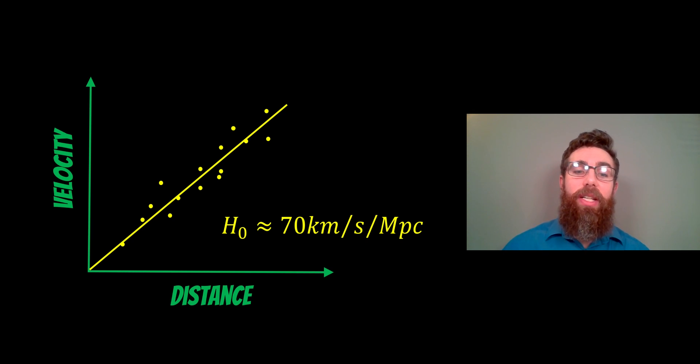It's a velocity per distance, and what that tells us is that the galaxies that are further away are traveling faster. It's 70 kilometers per second faster per megaparsec further away that they are in the universe. So we get this trend here.